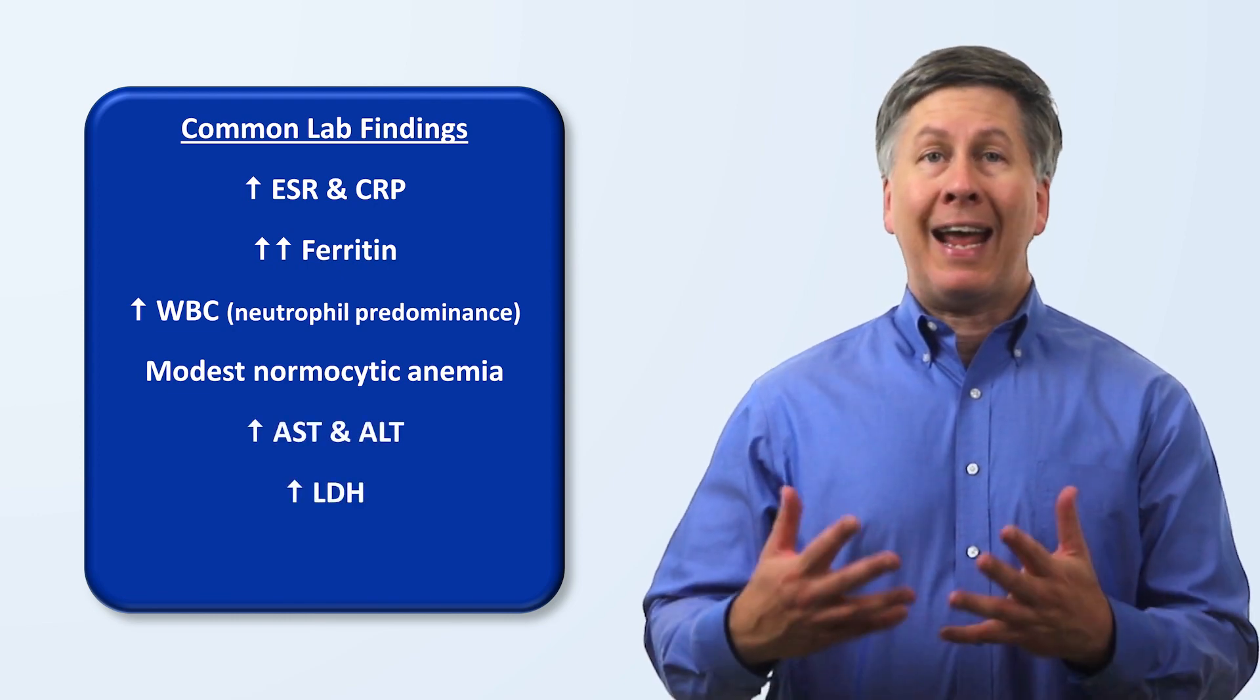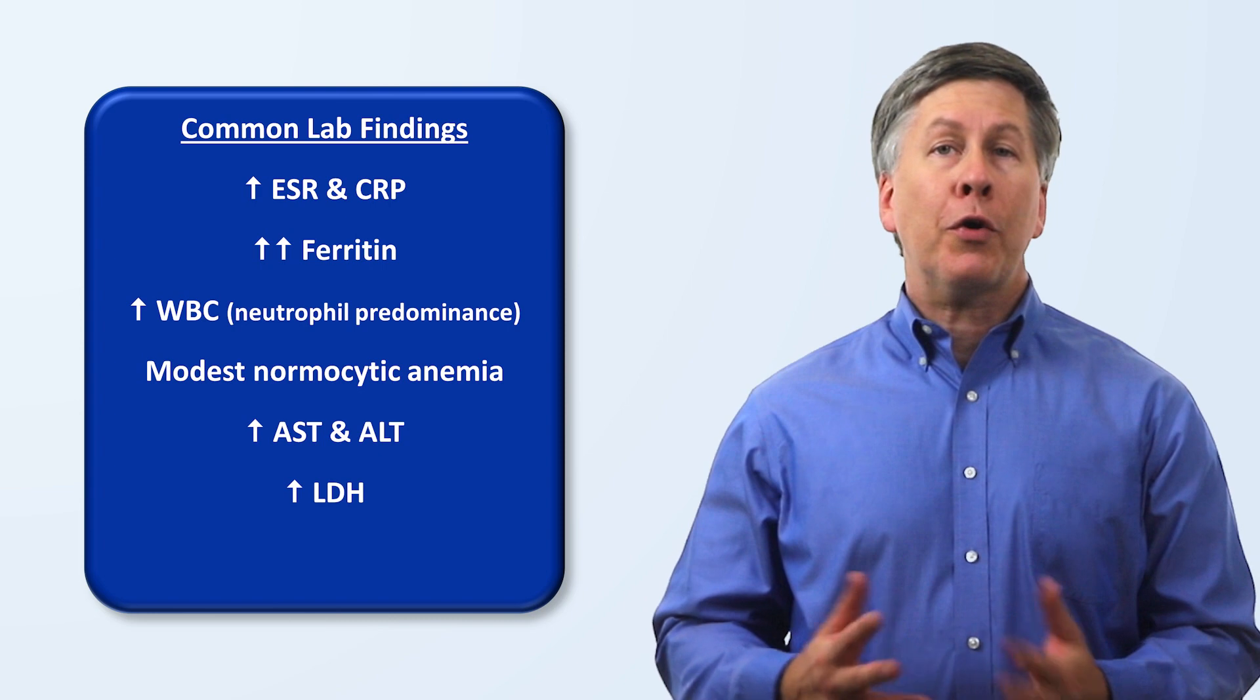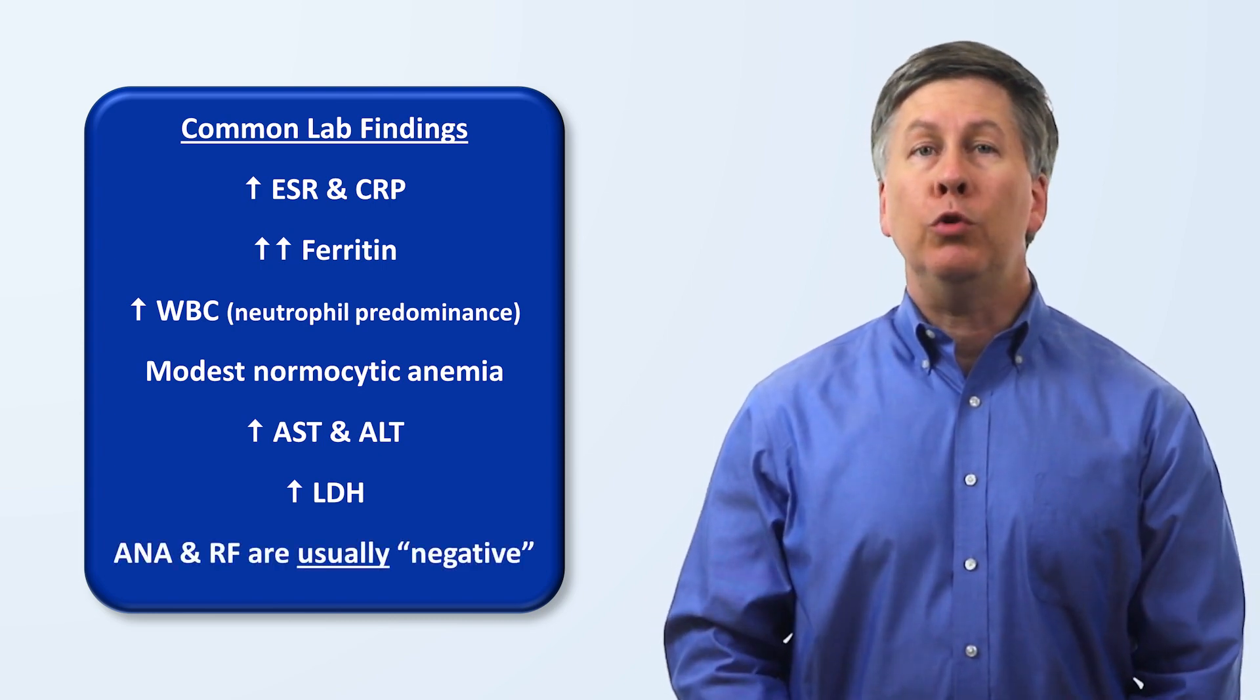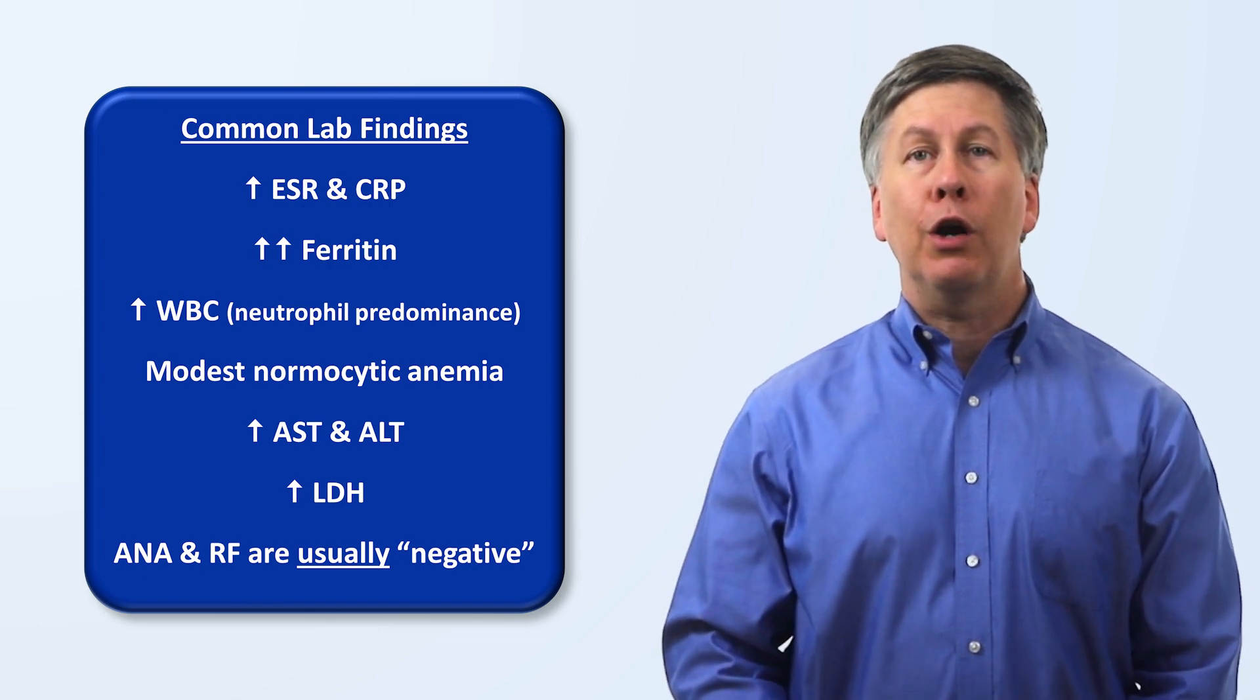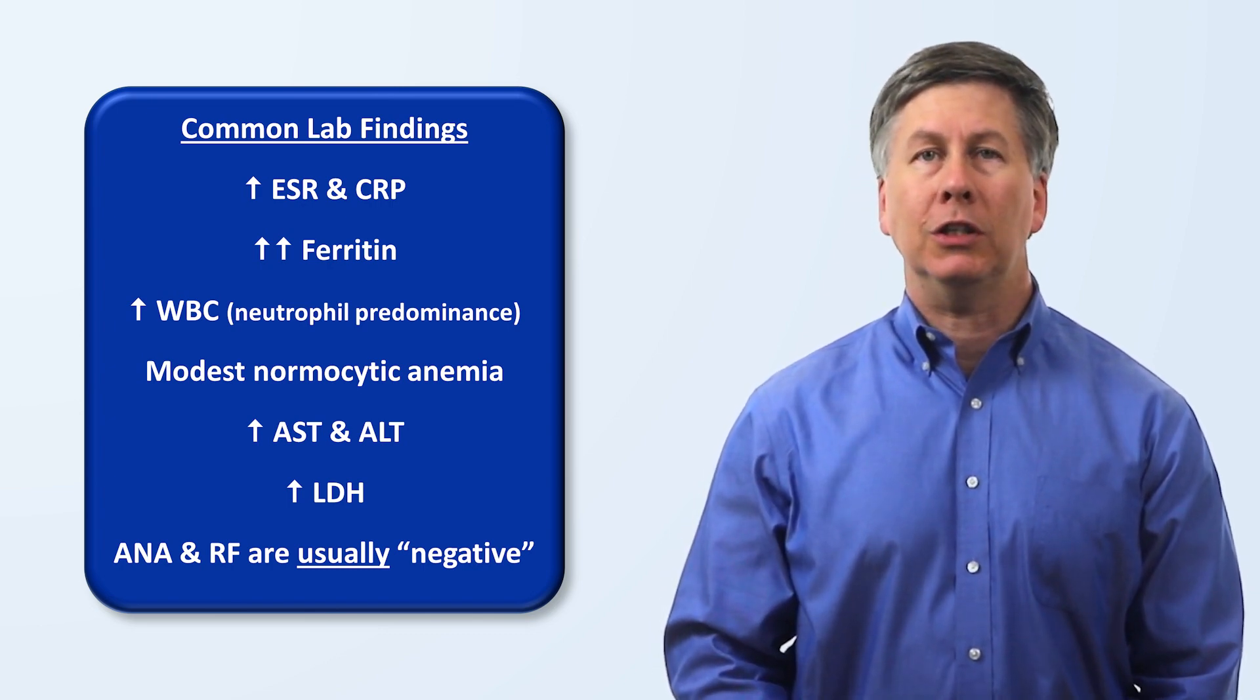As it is not an antibody-mediated disease, the autoantibodies, ANA, and rheumatoid factor are usually negative, which helps to distinguish adult-onset Still's disease from the more common connective tissue diseases.